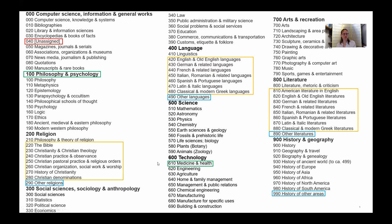There are other classifications that don't make a lot of sense to me, such as management and public relations being classified under technology. I would think that goes with business. And I'm not even sure where business is, although we do have commerce listed under social sciences.